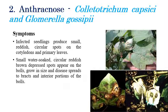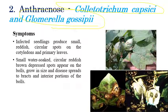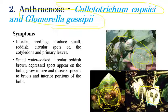The second disease is Anthracnose, which is caused by Colletotrichum capsici or Glomerella gossypii. Coming to the symptoms: infected seedlings or seeds produce reddish or circular spots, seen primarily on leaves and also on cotyledons. Water-soaked lesions or reddish color lesions can also be seen on leaf regions. Initially, small purple or reddish color spots appear, and in later stages, complete reddish, very large spots can be seen on leaves.